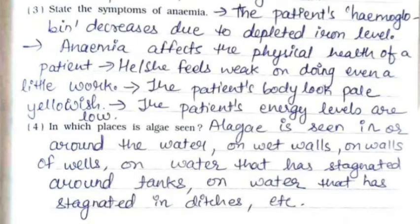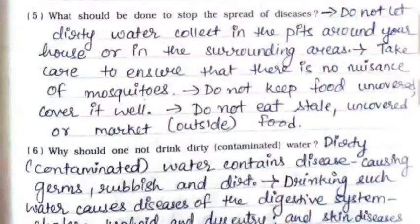Fourth: in which places is algae seen? Algae is seen in or around water, on wet walls, on the walls of wells, on water that has stagnated around tanks, and on water that has stagnated in ditches, etc. Fifth: what should be done to stop the spread of diseases? Do not let dirty water collect in pits around your house or surrounding areas. Take care to ensure there is no nuisance of mosquitoes.